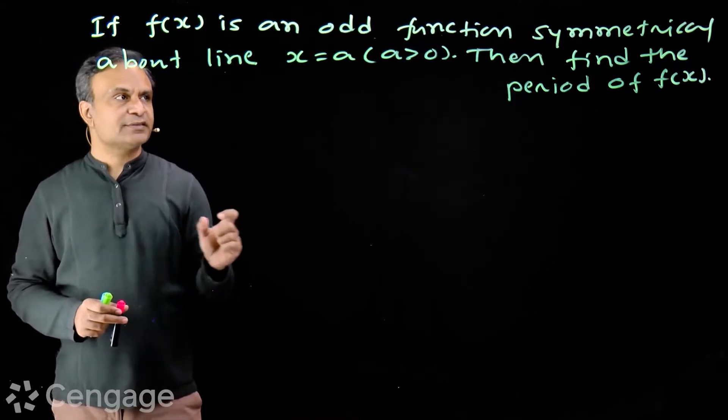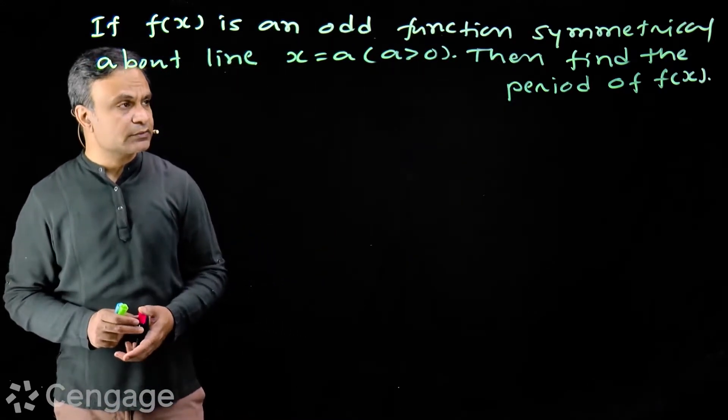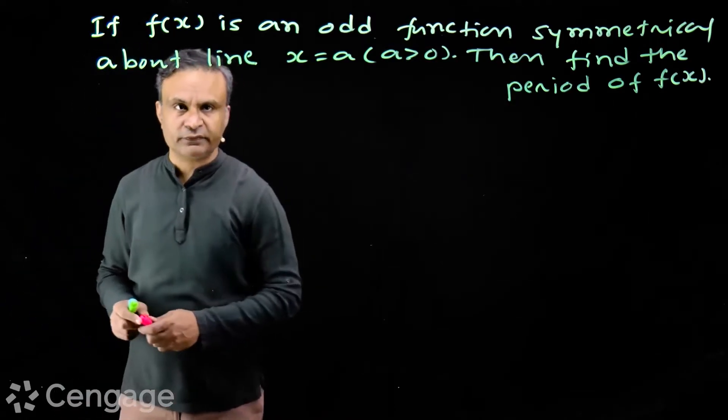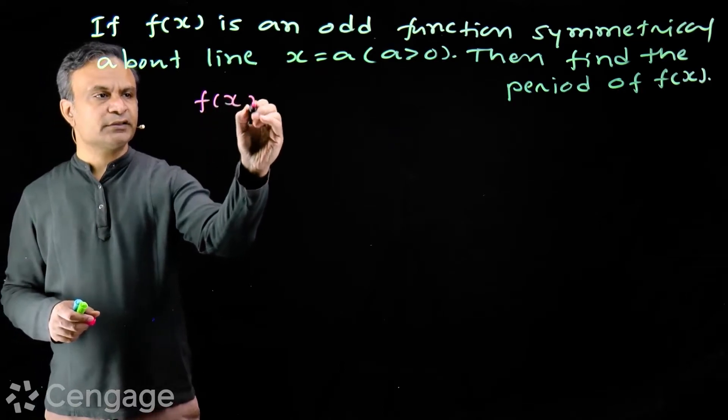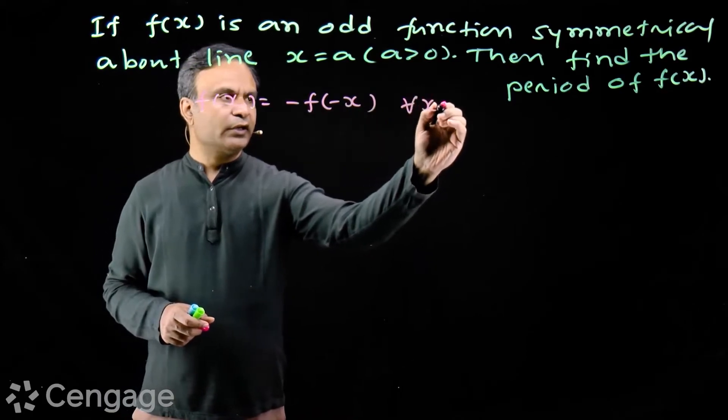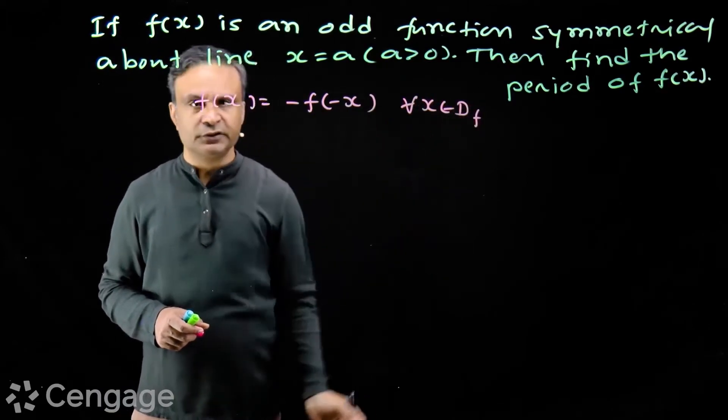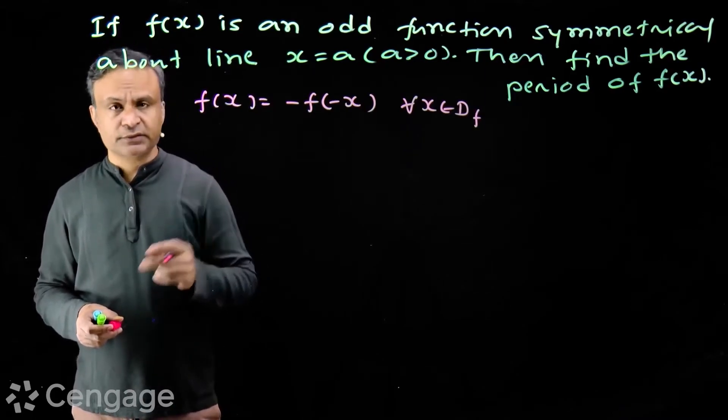Now look at this question. If f(x) is an odd function symmetrical about line x = a where a > 0, then find the period of function f(x). Function f(x) is an odd function.